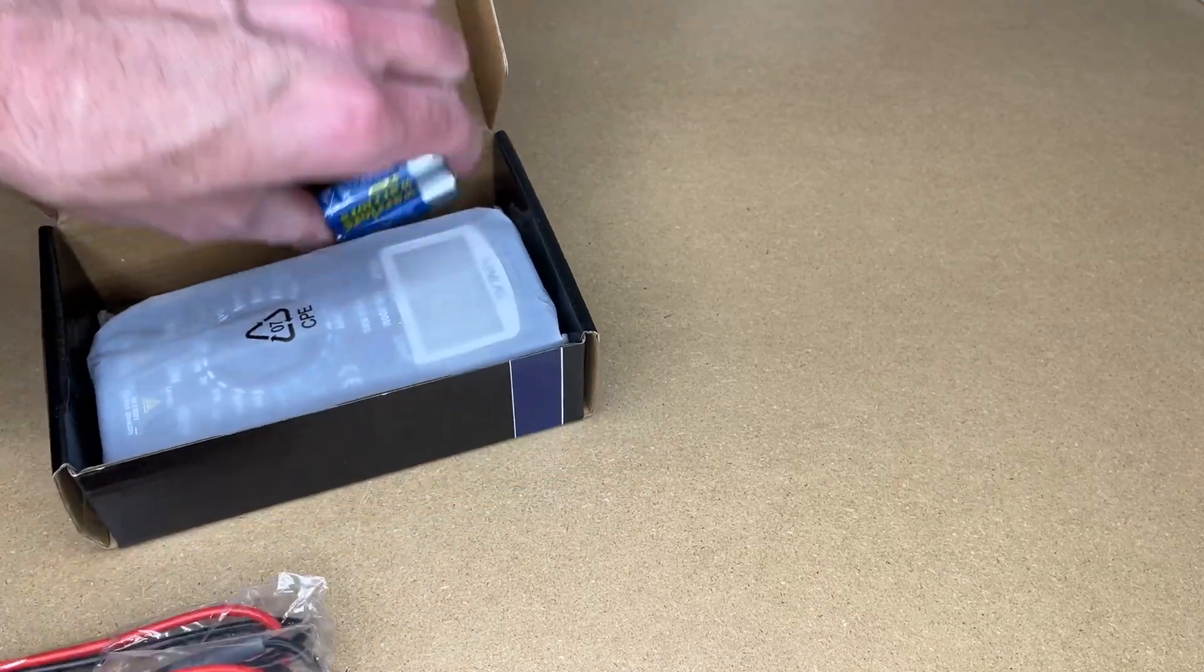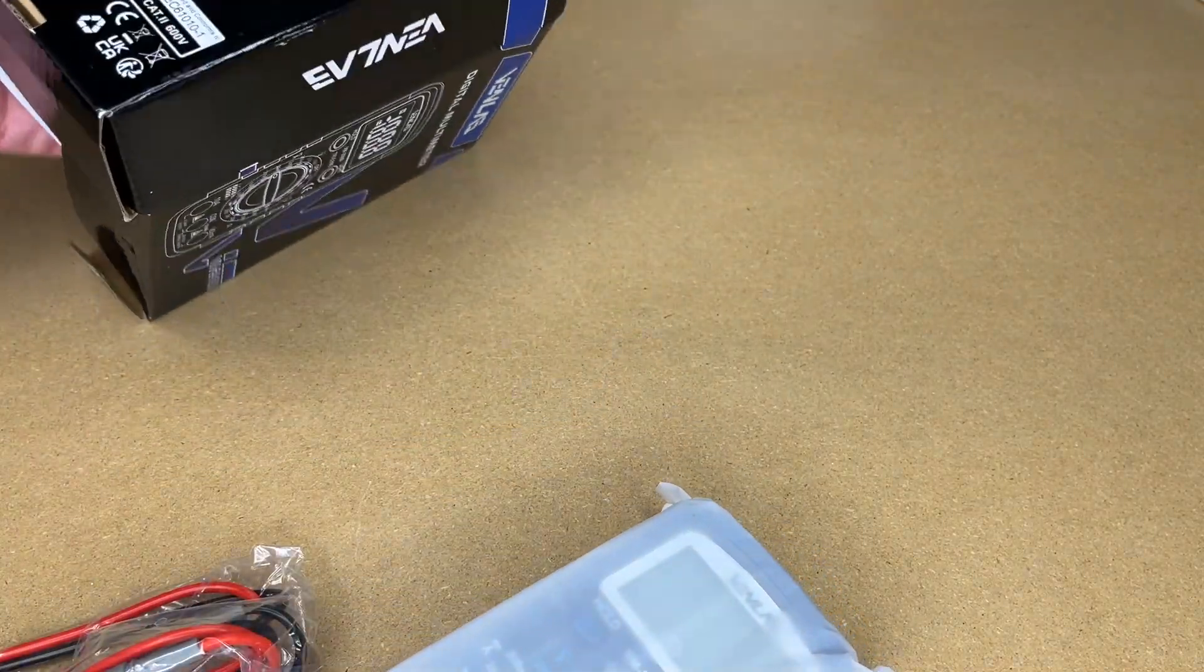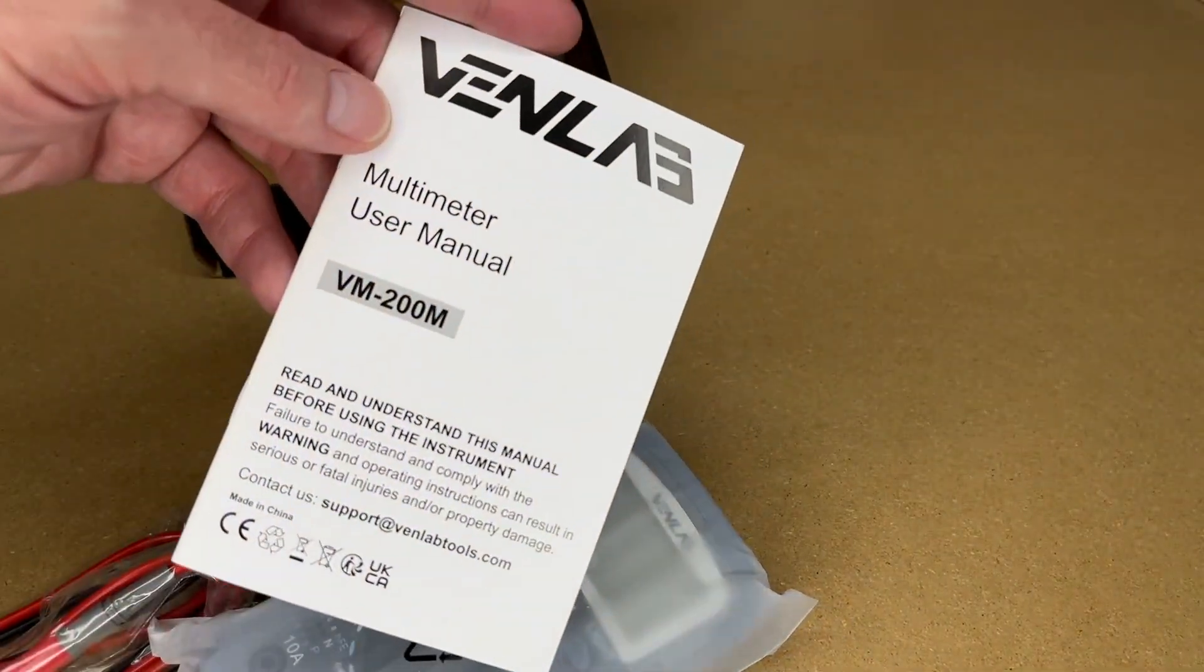Here we have the leads, two AA batteries, the meter itself, and here's the user manual. Let's take a quick look at it.